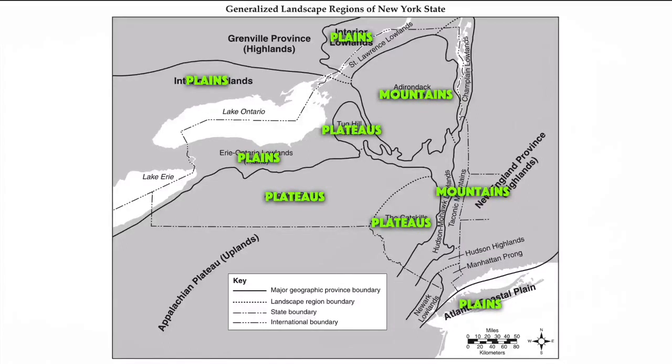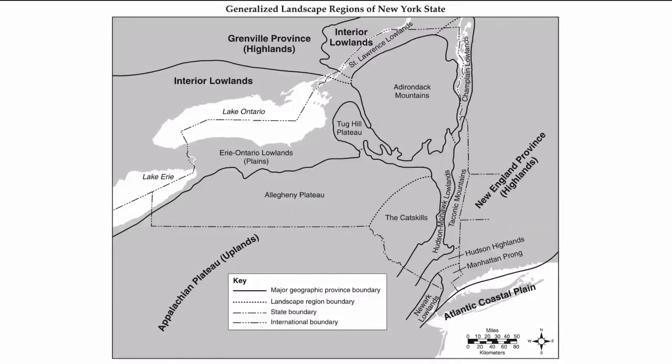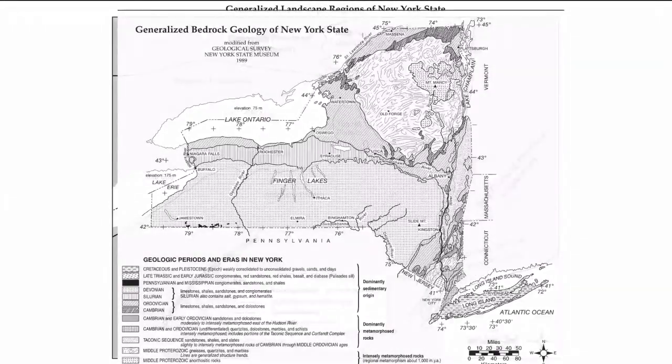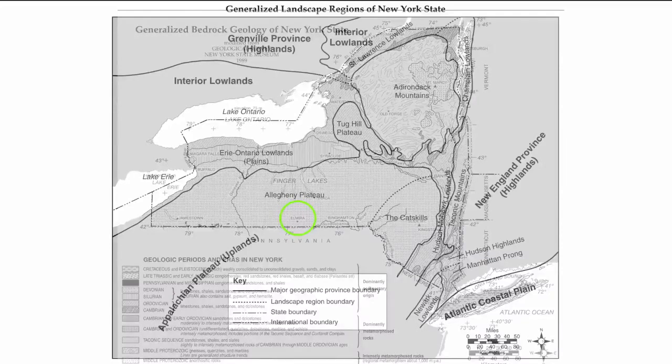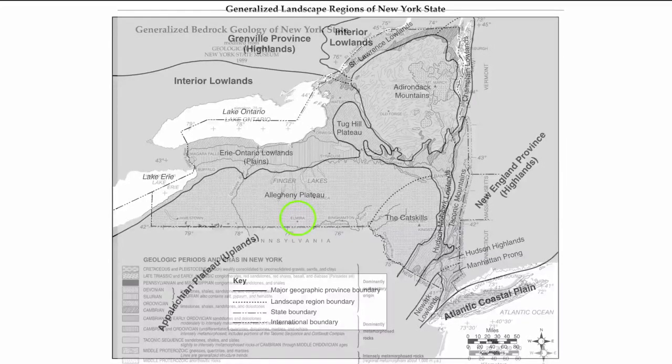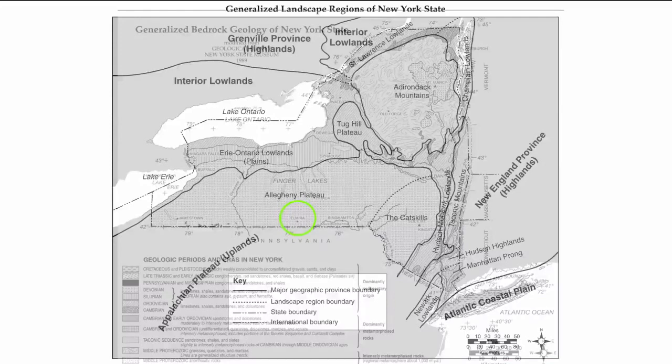This map is often referenced with page three, which also shows New York State's cities and the types of landscapes associated with those cities. A question you could be asked would be, what is the type of landscape associated with Elmira, New York? You would need to use the map on page three to locate Elmira, and Elmira is in the landscape known as the Allegheny Plateau.